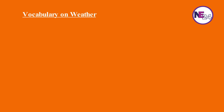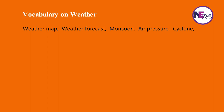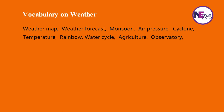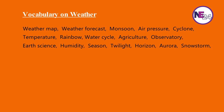English vocabulary on weather. Weather, weather map, weather forecast, monsoon, air pressure, cyclone, temperature, water cycle, agriculture, observatory, earth science, humidity, season, twilight, horizon, aurora, snowstorm, hailstorm.